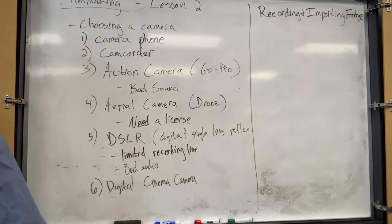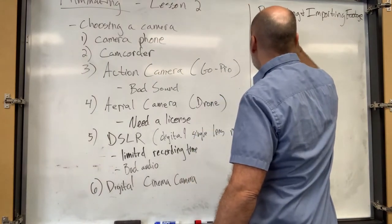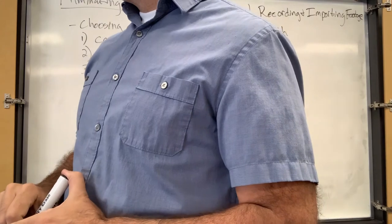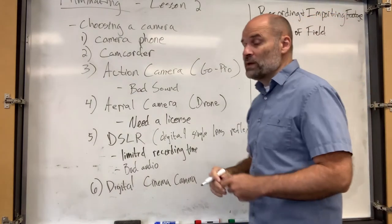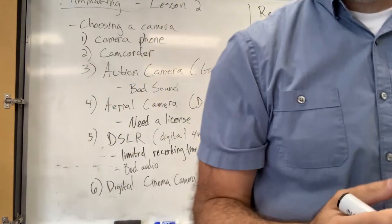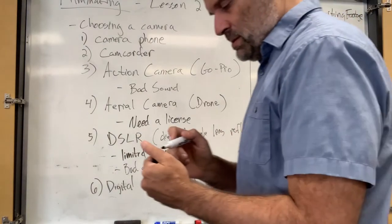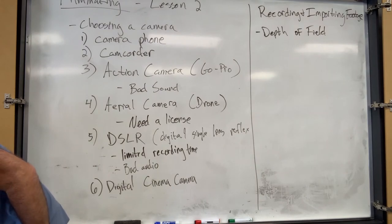So as you're recording and importing, there are some things to consider. One is depth of field — basically how deep your focus is. If you want a shallow depth of field, you focus on something right here and everything else is blurry. The depth might only be this much, so only that area will be in focus and everything else blurry. That's cool, that's cinematic.